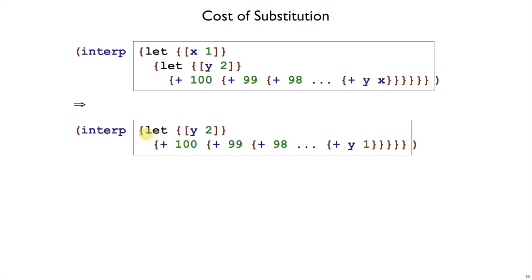And then after we've done all of that work, we need to handle this let y be 2, which will involve replacing this y with a 2, and again rebuilding those 100 plus expressions around it.